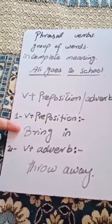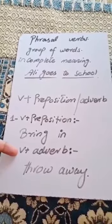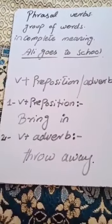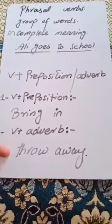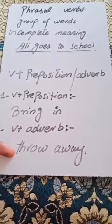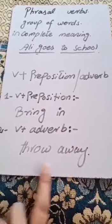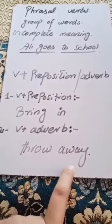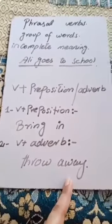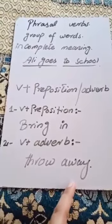Point number two is the use of verb plus adverb to make a phrasal verb. For example, 'throw away' — 'throw' is a verb and 'away' is an adverb. So with the use of verb plus adverb, we are able to make a new phrasal verb.